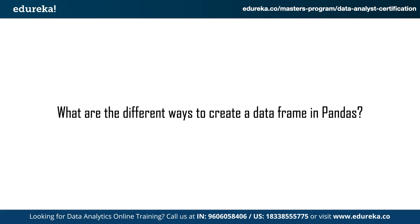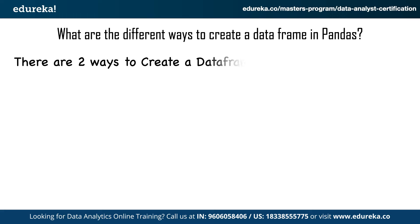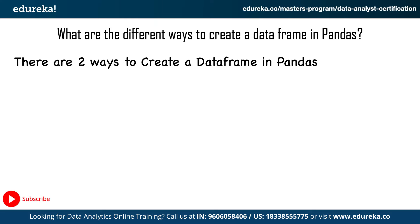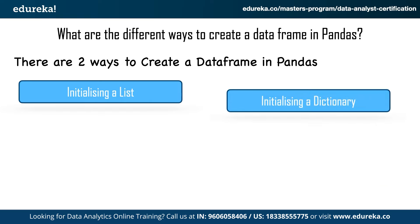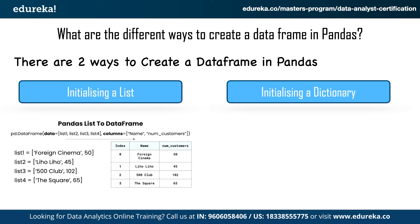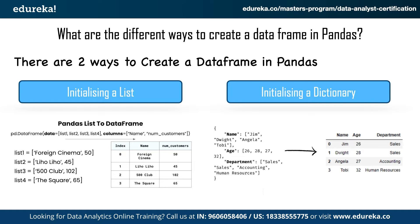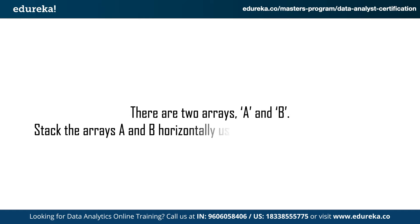The next question is: what are the different ways to create a data frame in Pandas? There are two ways — the first method is by initializing a list, and the second is by initializing a dictionary. To create a Pandas data frame using lists, you type pandas.DataFrame and give it two parameters: data and columns. The data parameter consists of a list containing different lists that are converted into records, and the columns parameter consists of your column names. Initializing using a dictionary is even simpler — the syntax is just pandas.DataFrame with the dictionary's name as the parameter.